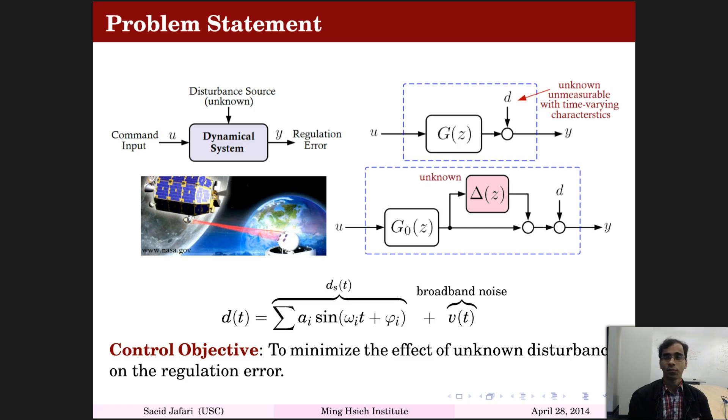Since the parameters and characteristics of the disturbance are unknown and time-varying, fixed-parameter controllers cannot handle this problem. We have to design an adaptive feedback control law to minimize the output norm.